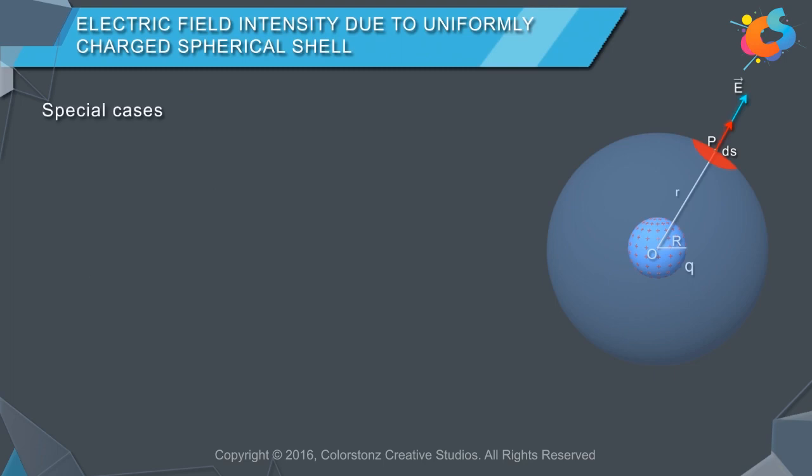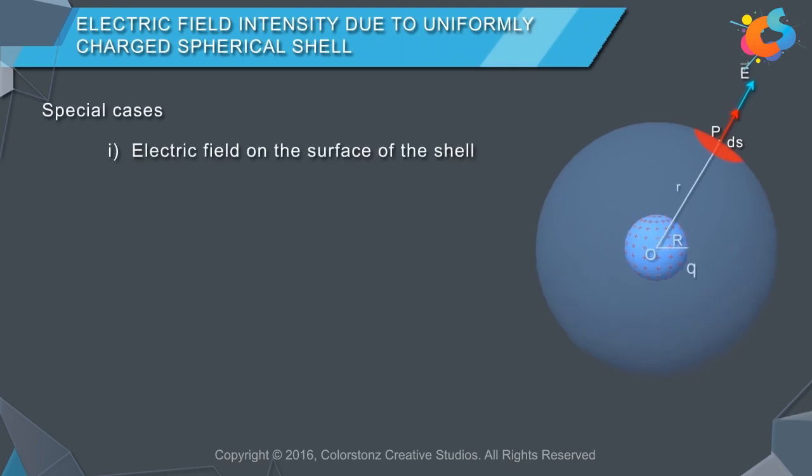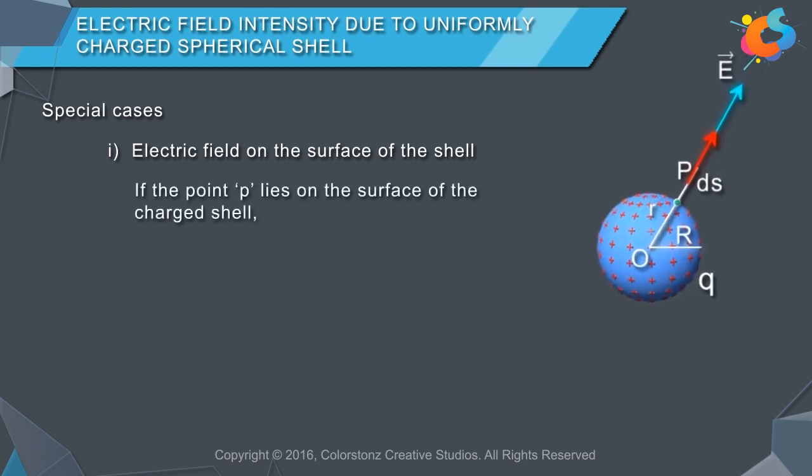Special Cases: Electric field on the surface of the shell. If the point P lies on the surface of the charged shell, then r = R. Thus, E = (1/4πε₀) × (Q/R²).